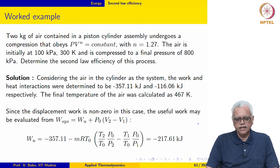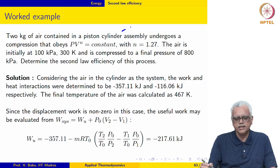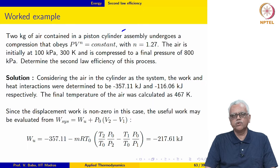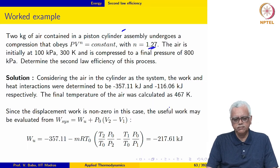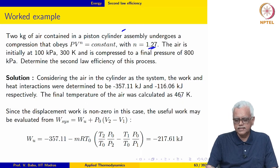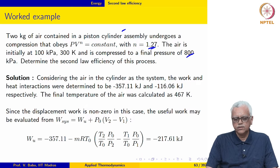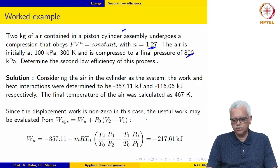The first example is a certain amount of air — 2 kg of air — contained in a piston-cylinder assembly which executes a polytropic process with polytropic index n equal to 1.27. Air is initially at 100 kPa and 300 Kelvin and is compressed to a final pressure of 800 kPa. We are asked to determine the second law efficiency for this process.